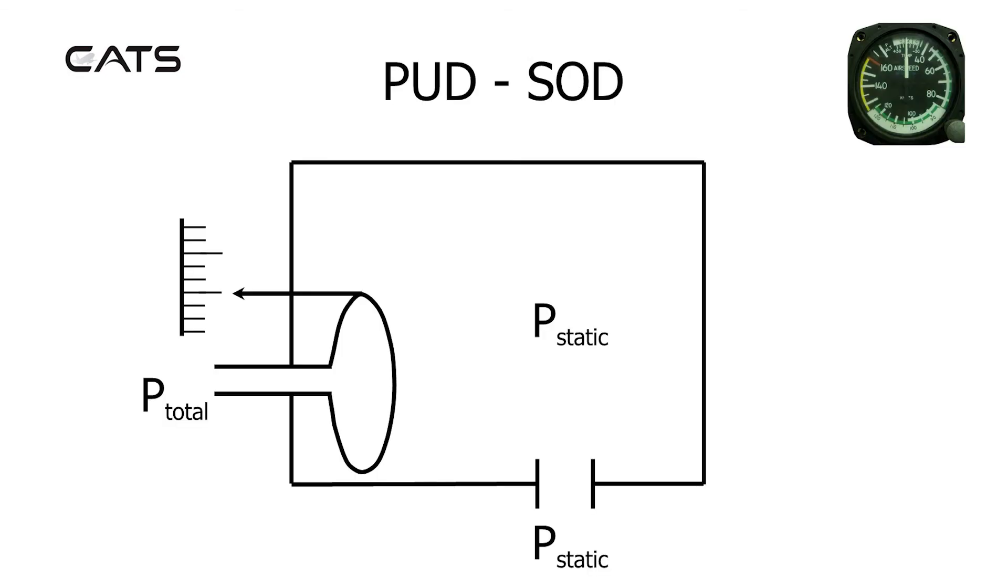Errors of the ASI can be remembered using the acronym PUD SOD. Essentially, if the pitot is blocked, the ASI will under-read in a descent. PUD: pitot under-reads descent.